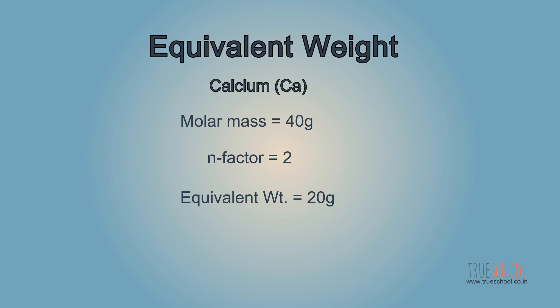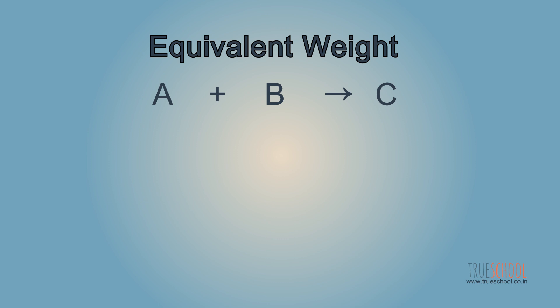Now, why do we need equivalent weight? Suppose you have two substances A and B which can react to form a product. How much of each substance would you take so that each of these are completely consumed?